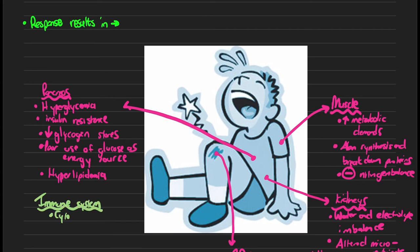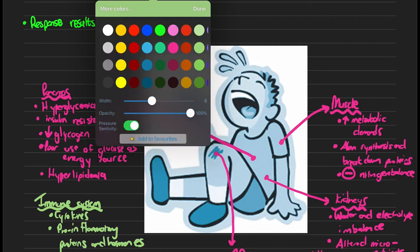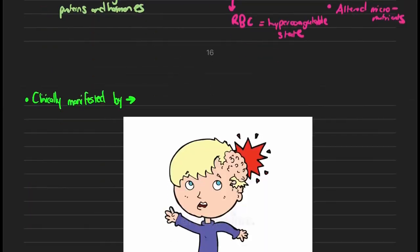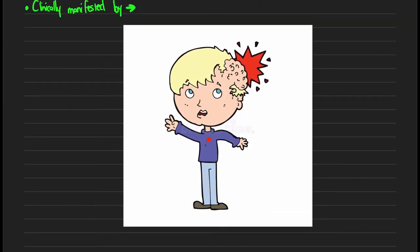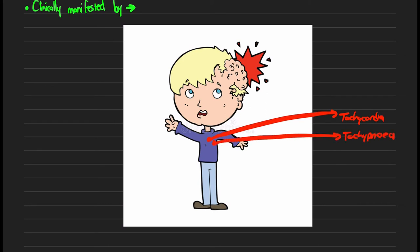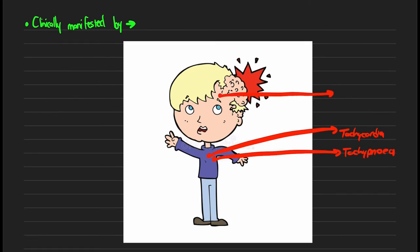In the next part of the video we'll be looking at the clinical manifestations of our trauma patients. Typically, trauma patients present with tachycardia and tachypnea. Looking more north on the patient, they typically have low-grade fevers. Moving more south, our patients typically also have oliguria — that is, decreased urine output.